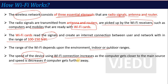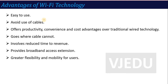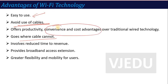In summary, Wi-Fi works through a router, antenna and radio signals that are transmitted and received to create a connection. The advantages of Wi-Fi technology include: it is wireless so easy to use and cables are avoided, it allows connectivity where cables cannot reach, it offers cost advantages over traditional wired technology, reduces time to generate revenue, broadband can be extended, and it provides greater flexibility and mobility to users.